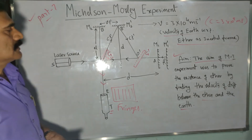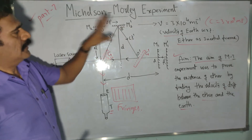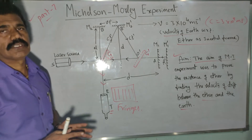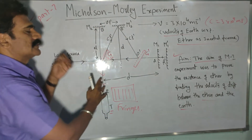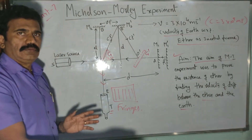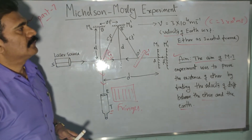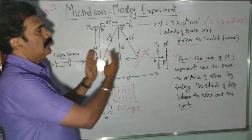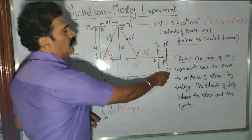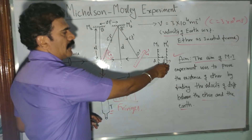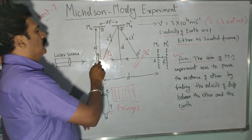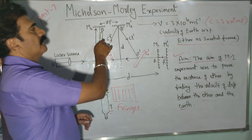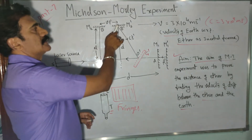Now consider the effect when the entire setup is on the earth's surface and earth itself is moving. If earth is moving with velocity 3×10⁴ m/s with respect to ether as an inertial frame, then the entire system is also moving. Mirror M1 shifts to position M1', so the reflection point A changes to A'. Similarly, when light travels from O toward M2, by that time M2 has shifted to M2', so reflection occurs at point B' instead of B.